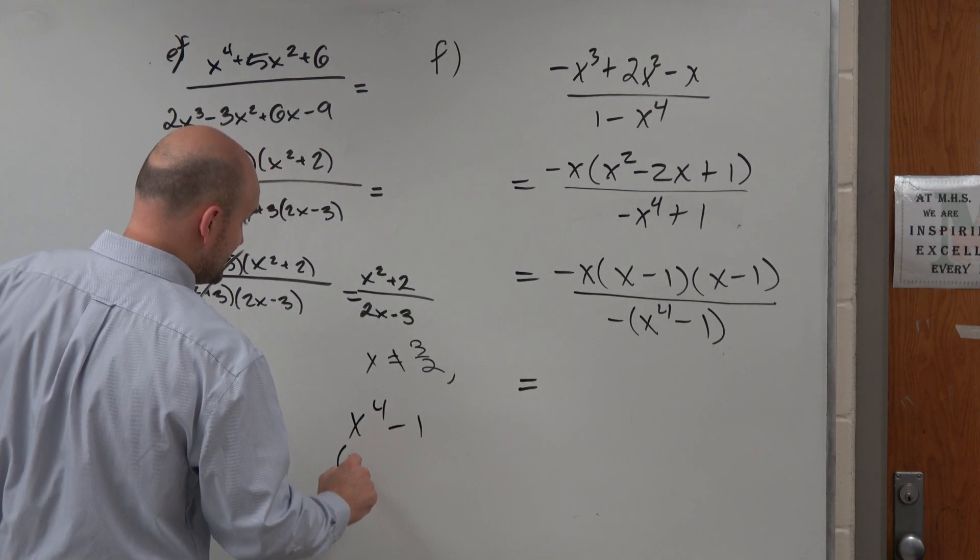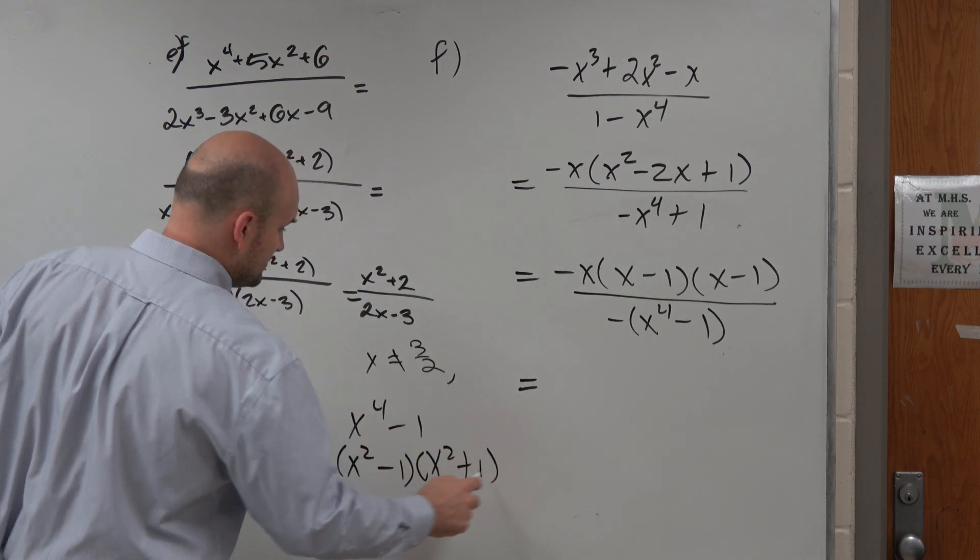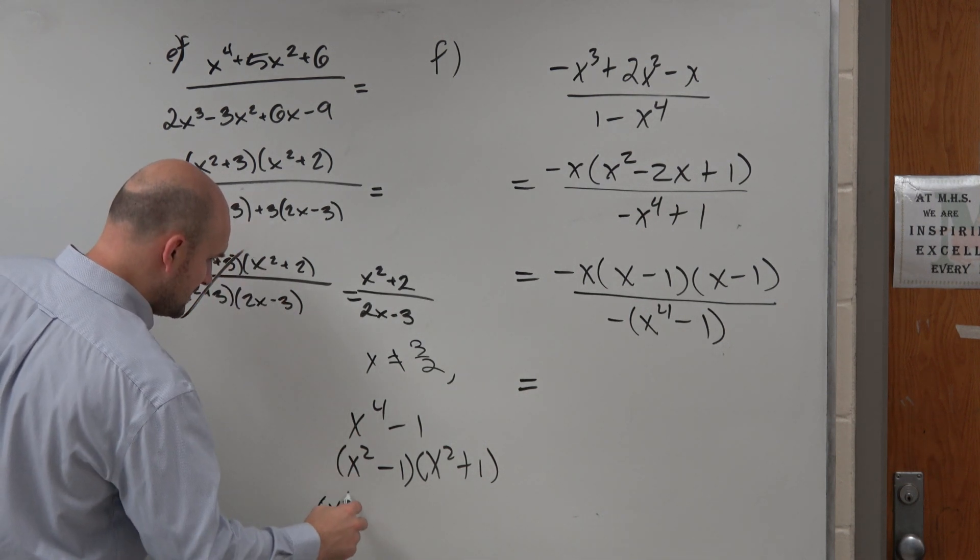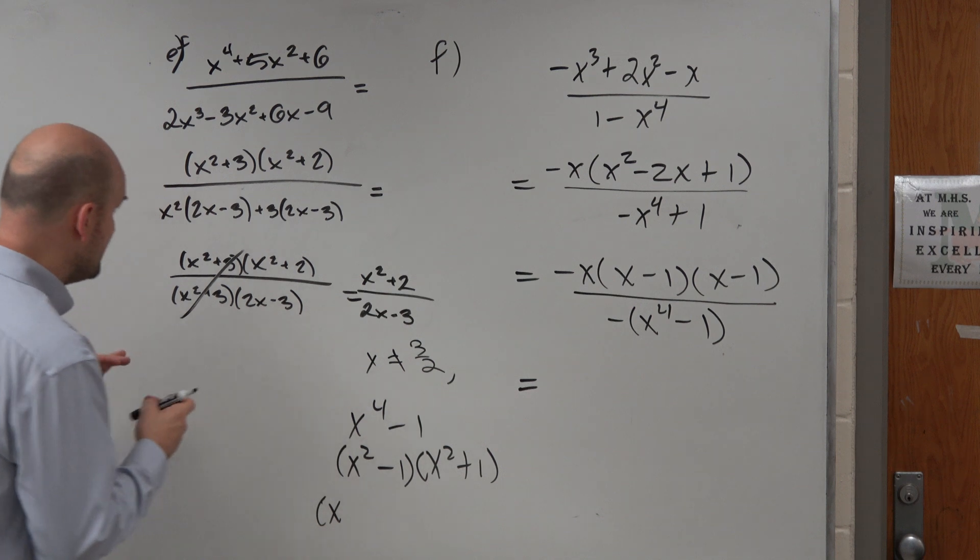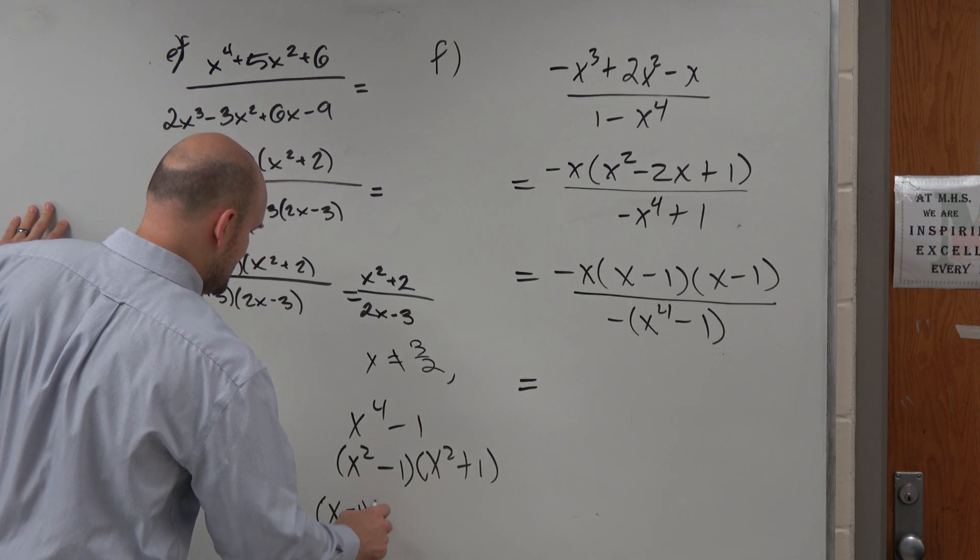x⁴ - 1 is a difference of two squares: x² - 1 times x² + 1. And then that can be further factored down into x - 1 times x + 1.